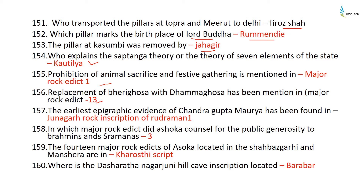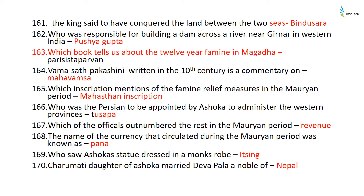The earliest epigraphic evidence of Chandragupta Maurya has been found in the Junagadh Rock Inscription of Rudradaman I. Major Rock Edict 3 contains Ashoka's counsel for public generosity to Brahmins and Shramanas. The 14 Major Rock Edicts of Ashoka located at Shahbazgarhi and Mansehra are in Kharoshti script. The Dashrath Nagarjuni Hill cave inscription is located at Barabar. The king said to have conquered the land between the two seas is Bindusara. Pushyagupta was responsible for building a dam across a river near Girnar in western India.